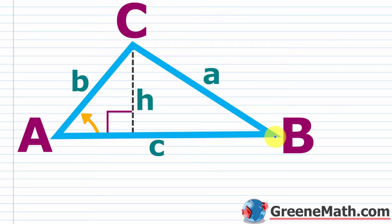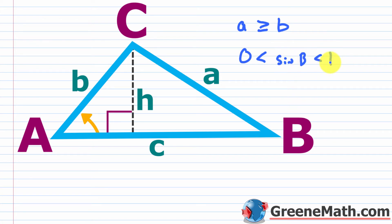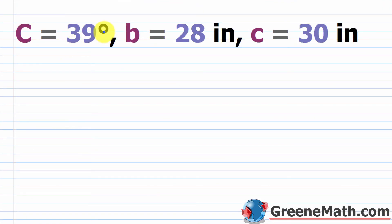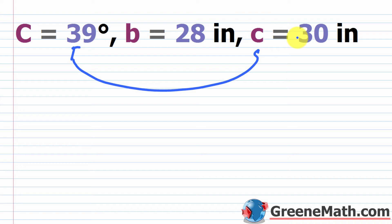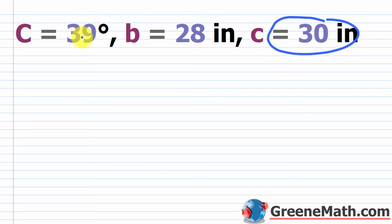The third scenario is when a is greater than or equal to b, giving exactly one triangle — and it won't be a right triangle. You can also verify that the sine of the computed angle B is between 0 and 1 (exclusive). For this example: C is 39 degrees, b equals 28 inches, and c equals 30 inches. Since c (opposite the given angle) is 30 inches, which is greater than b (28 inches), we have exactly one solution.